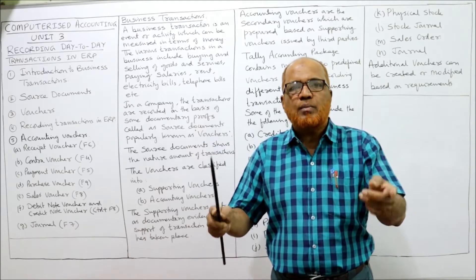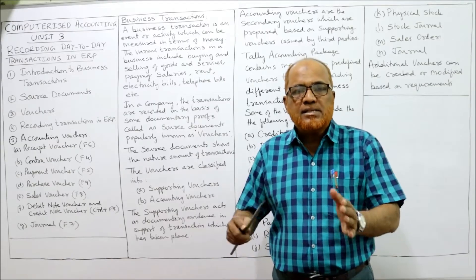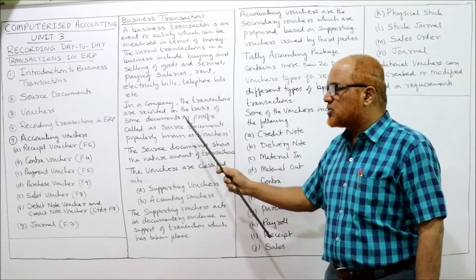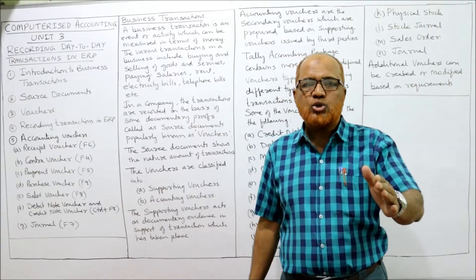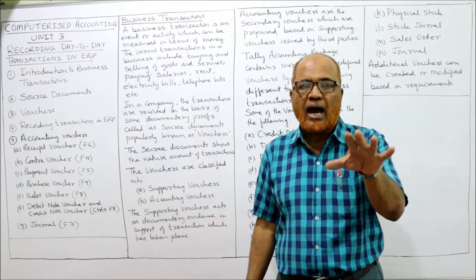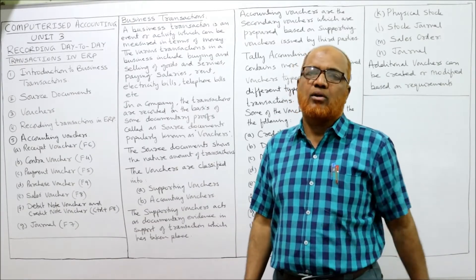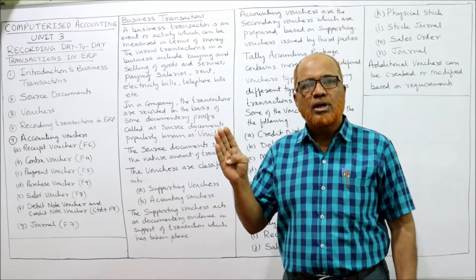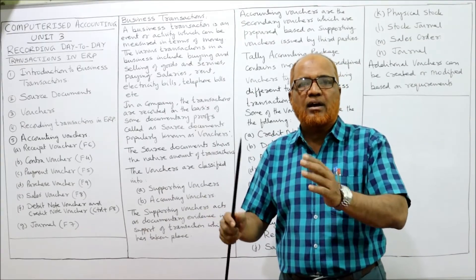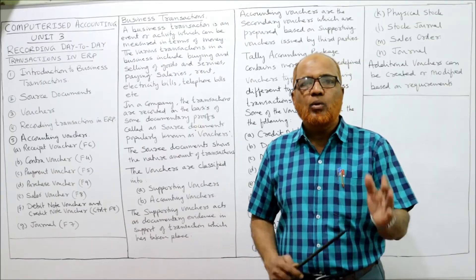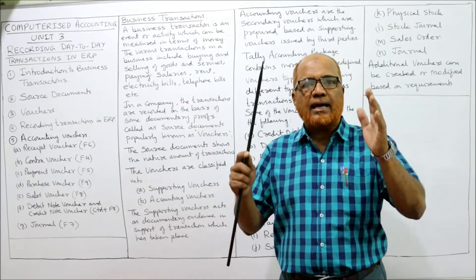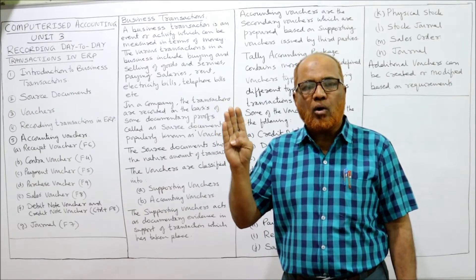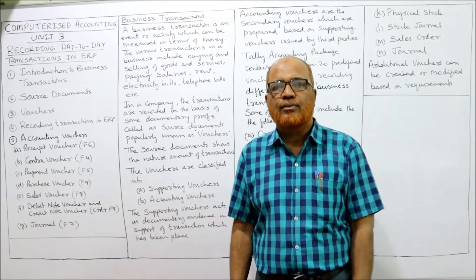Depreciation provided, bad debts provided — all these are called transactions. All these transactions must be recorded correctly; there is a systematic procedure of recording transactions. In a company, transactions are recorded on the basis of documentary proof. For every transaction there should be supportive or documentary proof that the transaction took place. For example, when goods are purchased, there should be some document produced — such as when you purchase a vehicle or a bike, you get an invoice bill. Similarly, when you purchase electronic goods like an air conditioner or TV, you get an invoice.